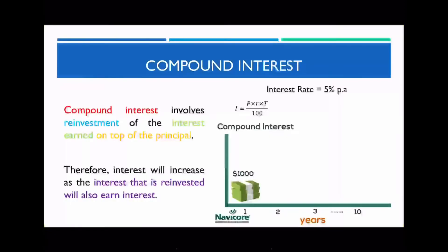Compound interest is a bit different. The word 'compound' actually means to add on, so compound interest involves the reinvestment of the interest that you've earned in previous years, and you keep adding it on top of the principal. This means that the interest will always increase, as the interest that is reinvested will also earn interest on top.